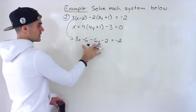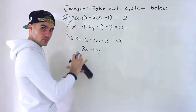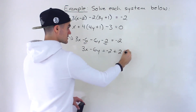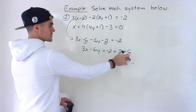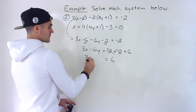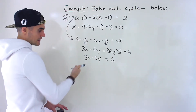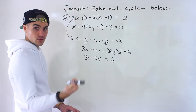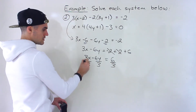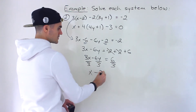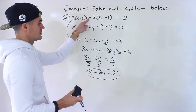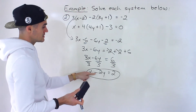Distributing: 3x minus 6 minus 6y minus 2 equals negative 2. Collecting like terms — variables on the left — we bring the negative 6 and negative 2 over: negative 2 plus 2 plus 6. The negative 2 and positive 2 cancel, leaving 3x minus 6y equals 6. We can divide everything by 3, giving x minus 2y equals 2. This is just the simplified form of the same equation.